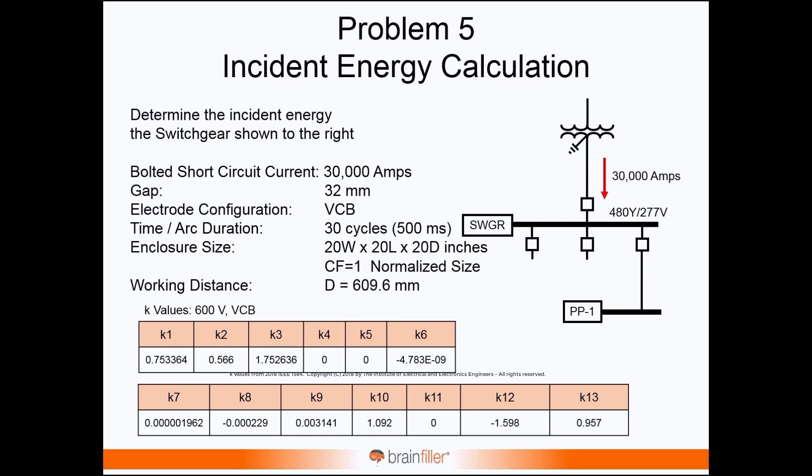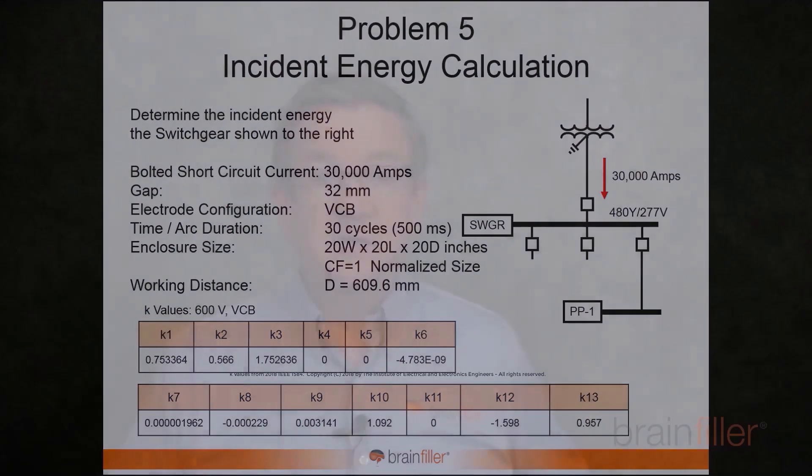The enclosure size — the default enclosure size from back in 2002 for switchgear was 20 by 20, and we're going to stick with that. The nice thing about this problem is that using the 20 by 20 enclosure size is the default value. If you don't make any correction for different heights and widths, the default is 20 by 20, so we don't have to address the correction factor for enclosure size.